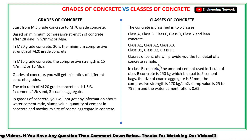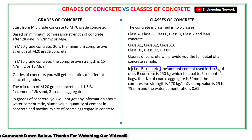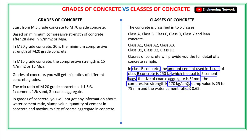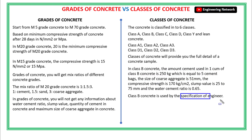Like in Class B concrete, the quantity of cement required in one cubic meter is 250 kg, which is equal to 5 cement bags. The maximum size of coarse aggregate in Class B concrete is 51 mm. The minimum compressive strength of Class B concrete is 170 kg per centimeter square. The slump value is 25 to 75 mm, and the water-cement ratio is 0.65. Also, Class B concrete is used on the specification of the engineer, meaning if the engineer or designer specifies Class B concrete for a particular member, then only you can use it; otherwise you cannot.